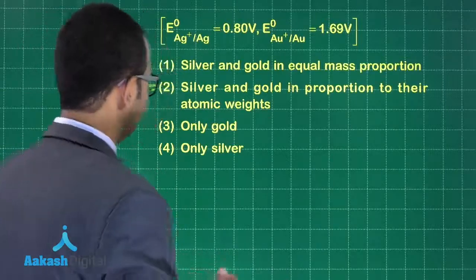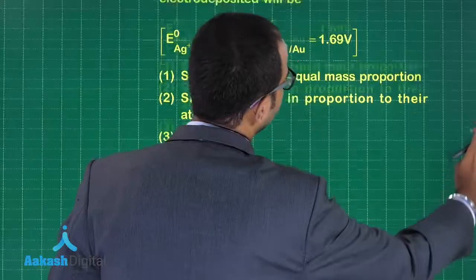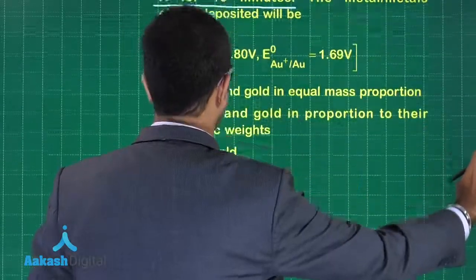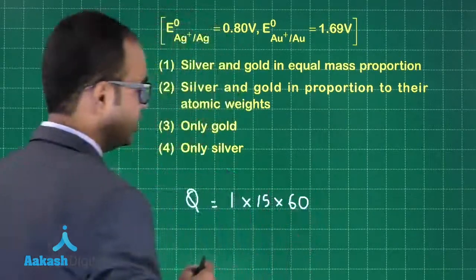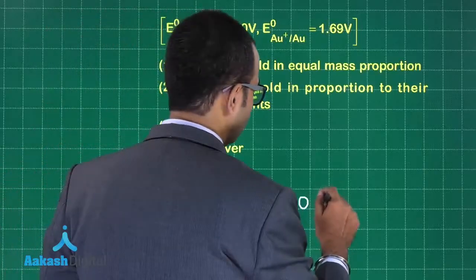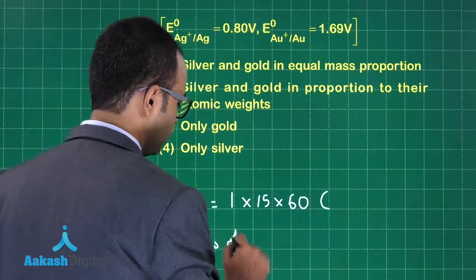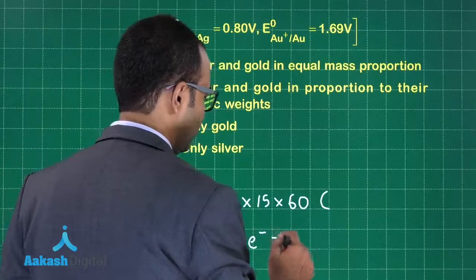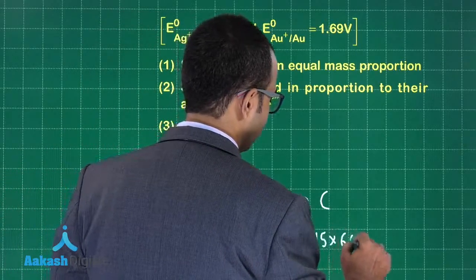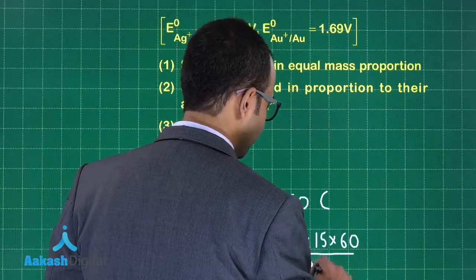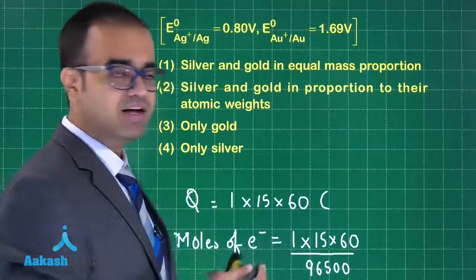So Q will be how much? 1 into 15 into 60. This will be the charge in coulombs. So how many moles of electrons am I passing? Moles of electrons will be equal to 1 into 15 into 60 divided by 96,500. This is the moles of electrons that we are passing in the solution.